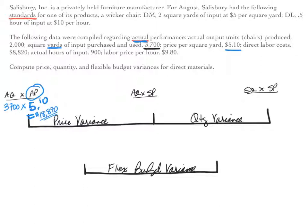For peg two we need actual quantity times standard price. Actual quantity is 3,700, brought over from peg one. The standard price per square yard from the standards given was $5. So peg two is 3,700 × $5 = $18,500.